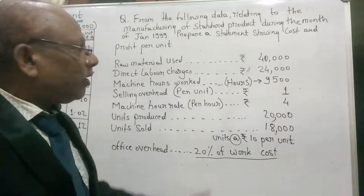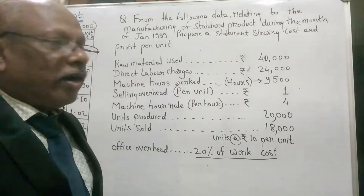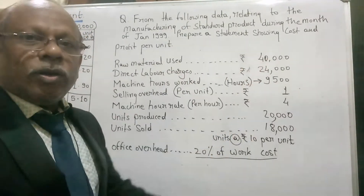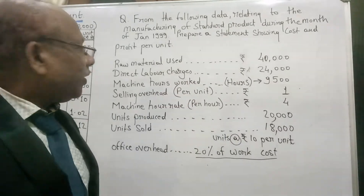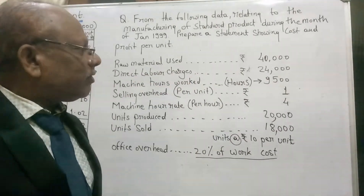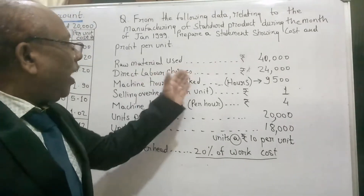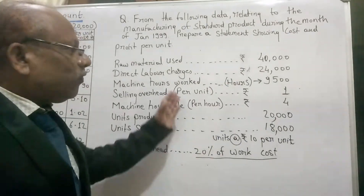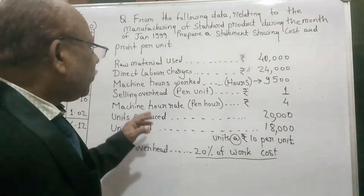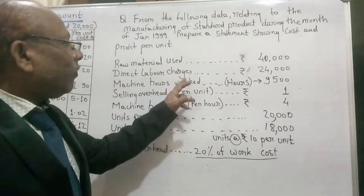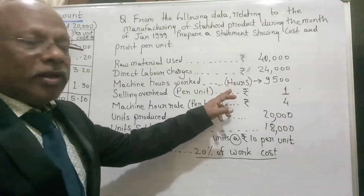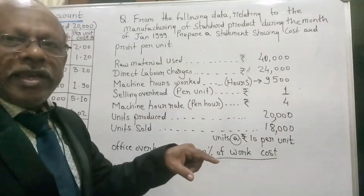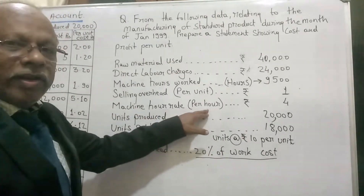Raw material used — also called raw material consumed — is given as 40,000 rupees. Direct labour charges are also given. As we know, adding labour or wages to raw material consumed gives us prime cost. Machine hours worked is 9,500 hours, and the machine hour rate is 4 rupees per hour.